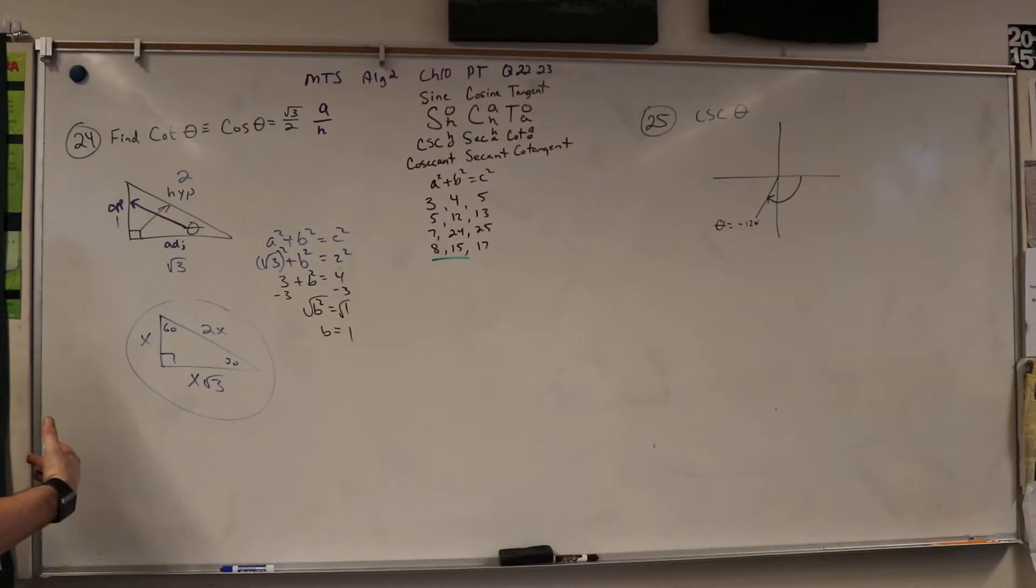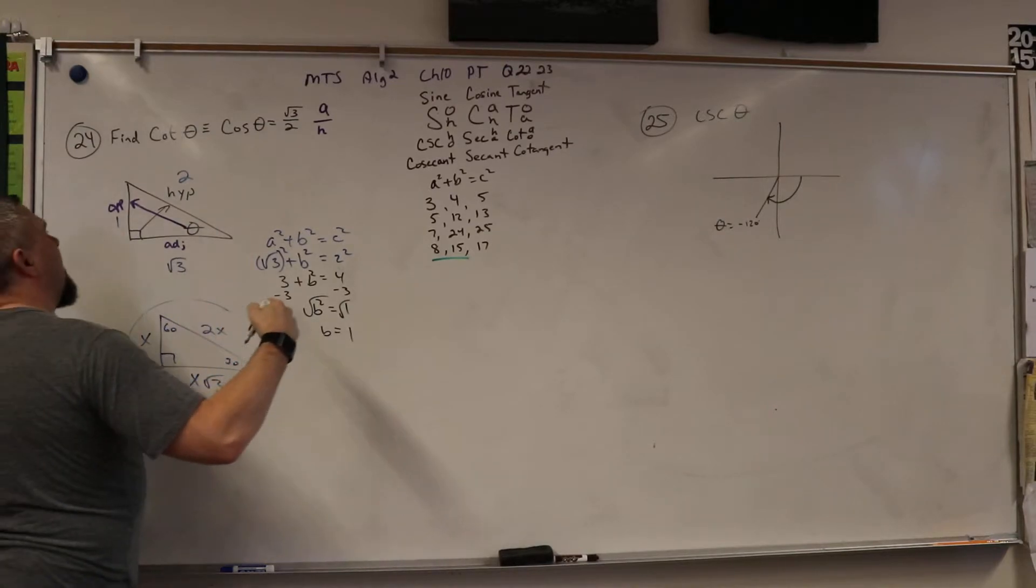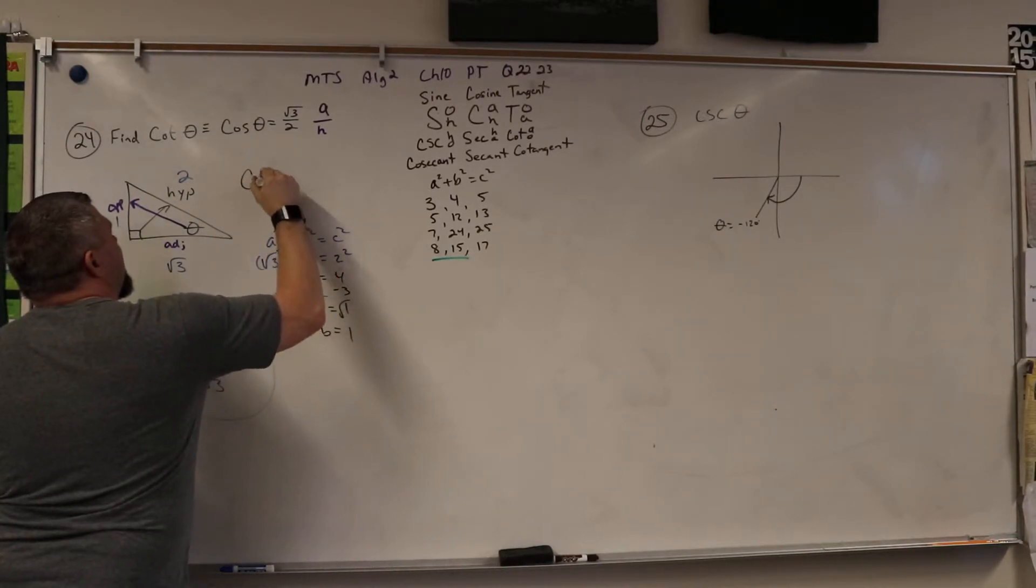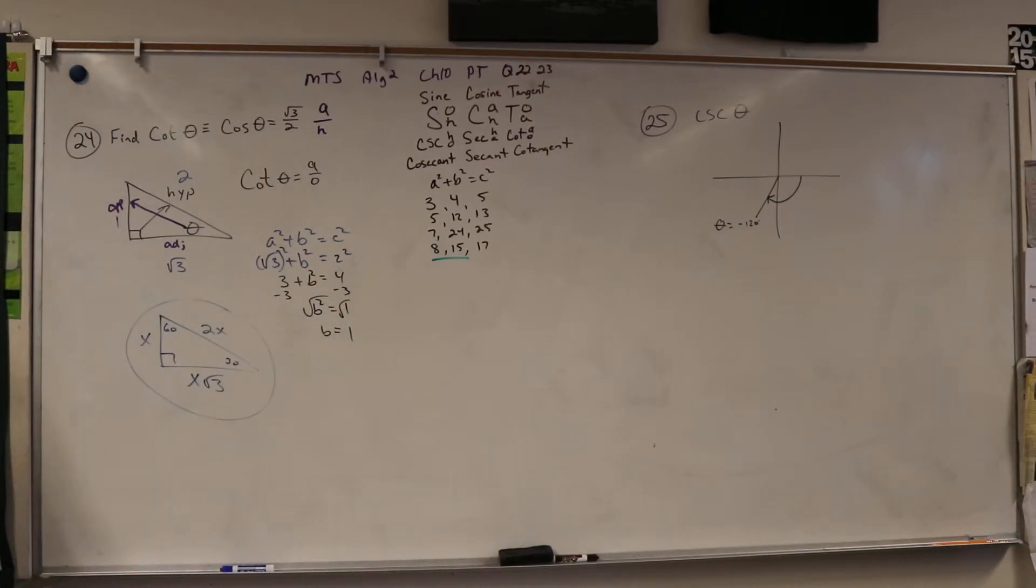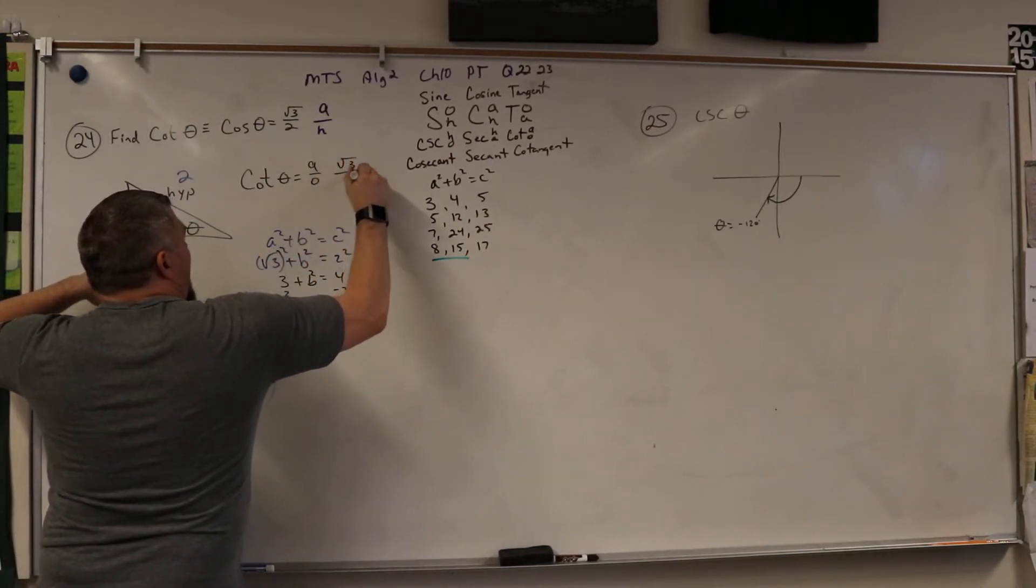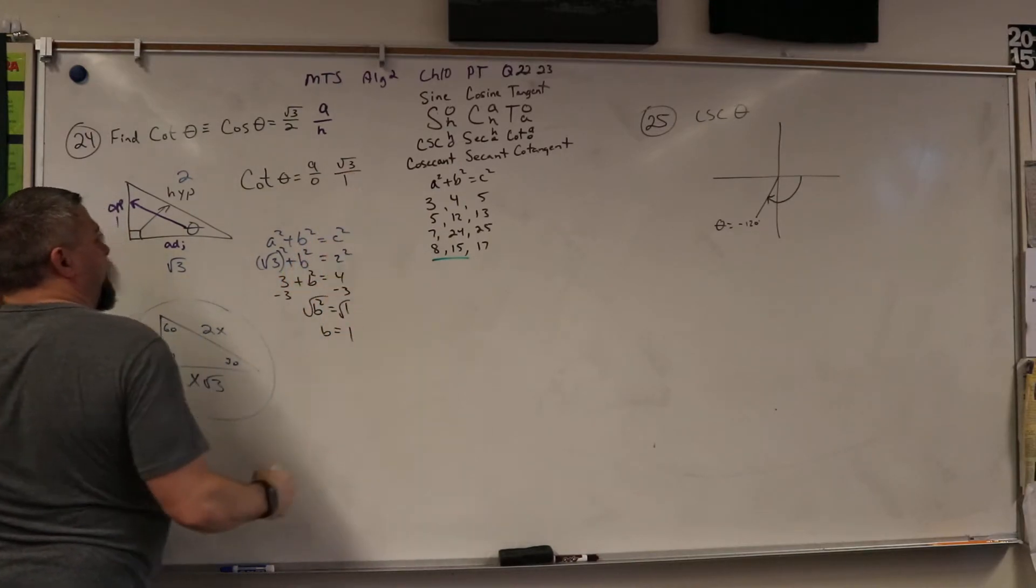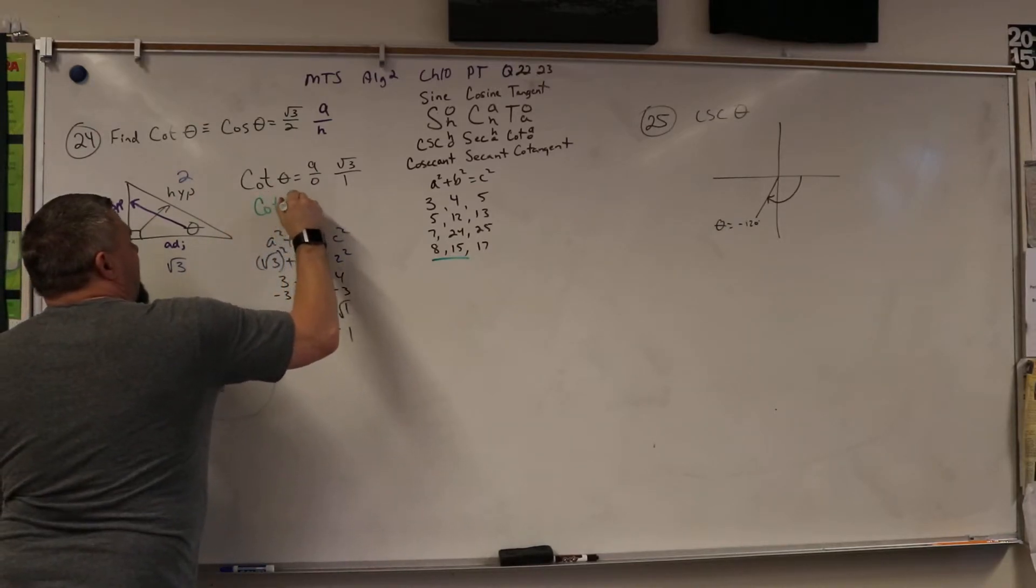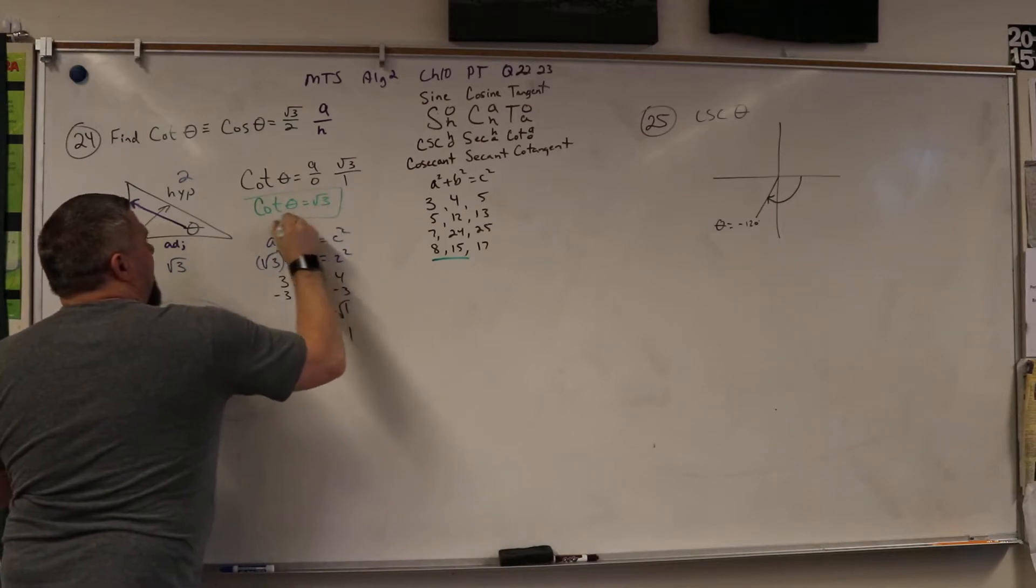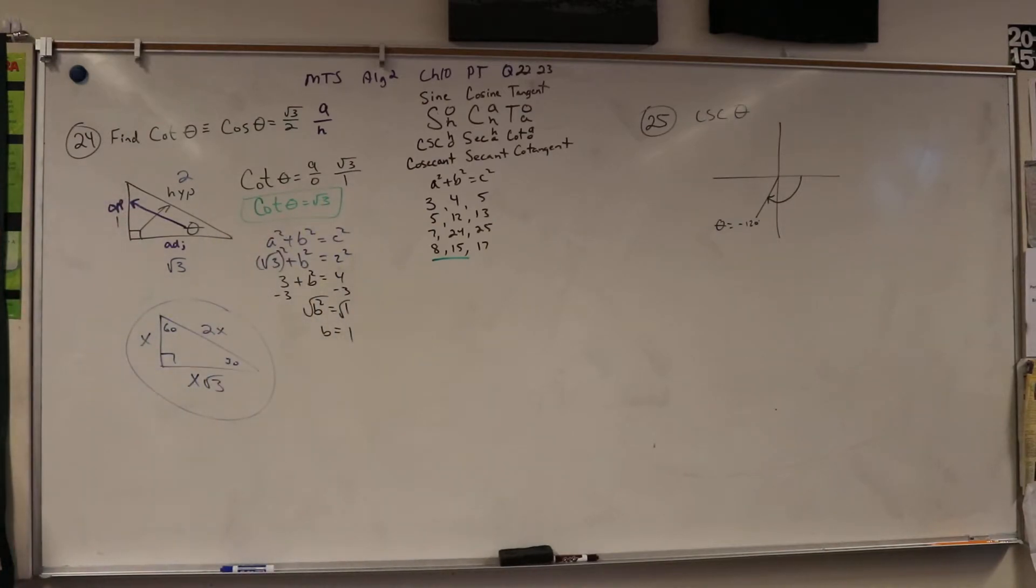Now we need to go, okay, they want cotangent. What is cotangent? Yeah, so I know that cotangent theta is equal to a over o. So I look for my a, that's square root of three, and I look for my o, and that's one. So therefore cotangent theta equals square root three. So that's simple.